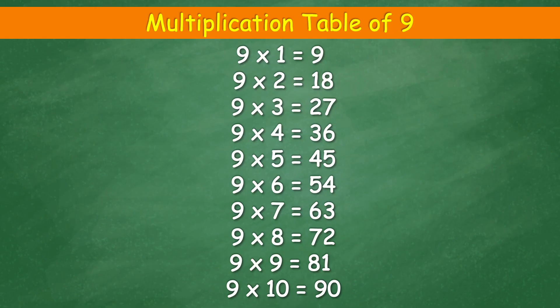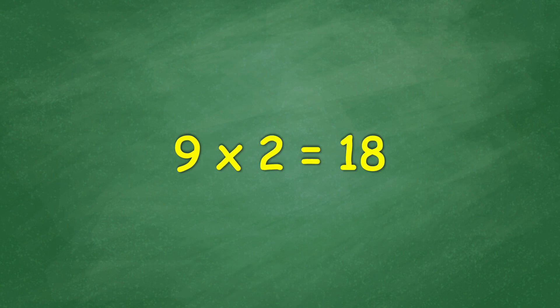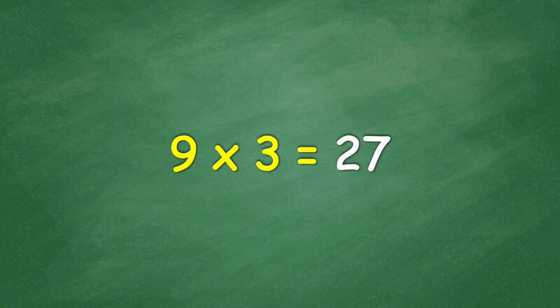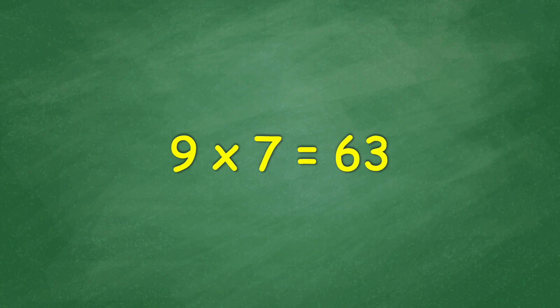Multiplication Table of 9. 9 x 1 equal 9, 9 x 2 equal 18, 9 x 3 equal 27, 9 x 4 equal 36, 9 x 5 equal 45, 9 x 6 equal 54, 9 x 7 equal 63.